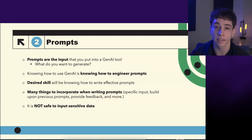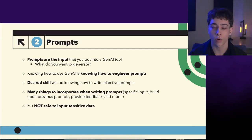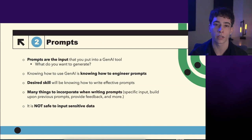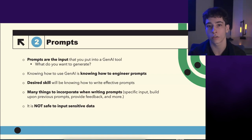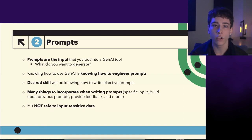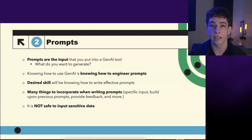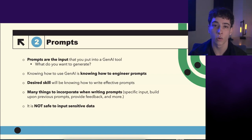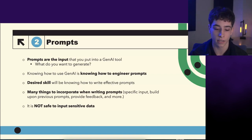It is not safe to input sensitive data into AI tools — the same as anywhere on the internet. You don't want to put out your social security number, birth certificate, or address. Even though OpenAI is dedicated to keeping data safe, that does not always mean that is the case. There's always a possibility for a hack or data leak, so it's always a good idea to never input sensitive data in the first place.